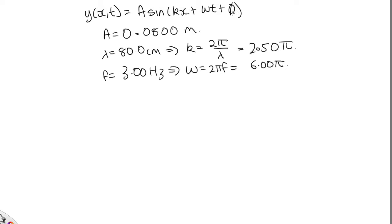And now all we need to do is work out this phase constant. Well, we're told y at (0, 0) is equal to 0. So substituting in 0 for x and 0 for t, we have this is equal to A sine phi. And sine of 0 is 0. So phi equals 0 will satisfy this equation.